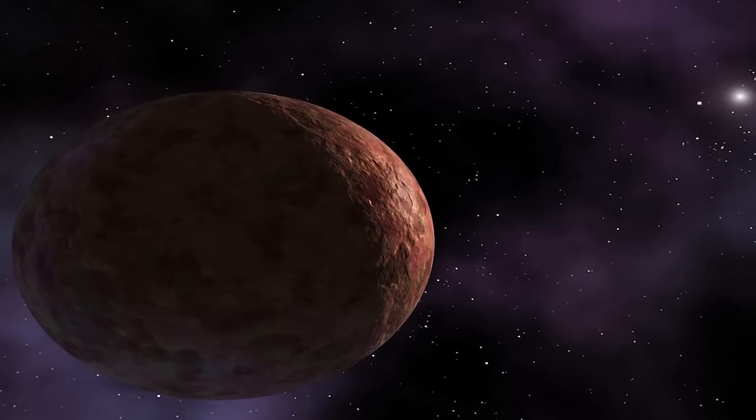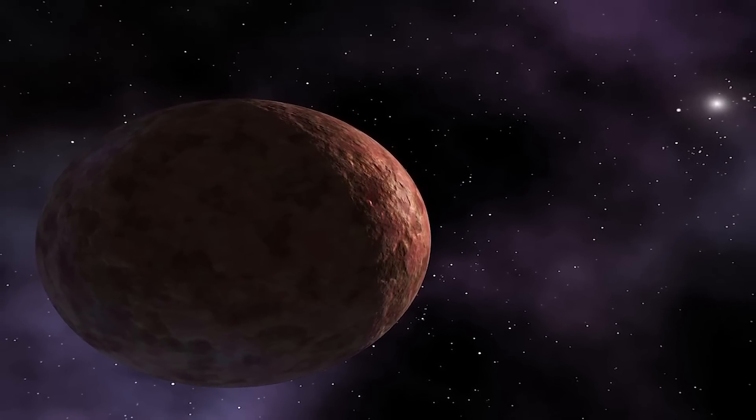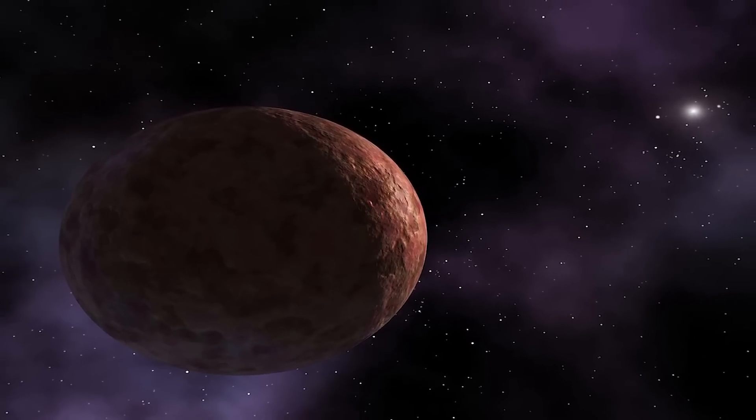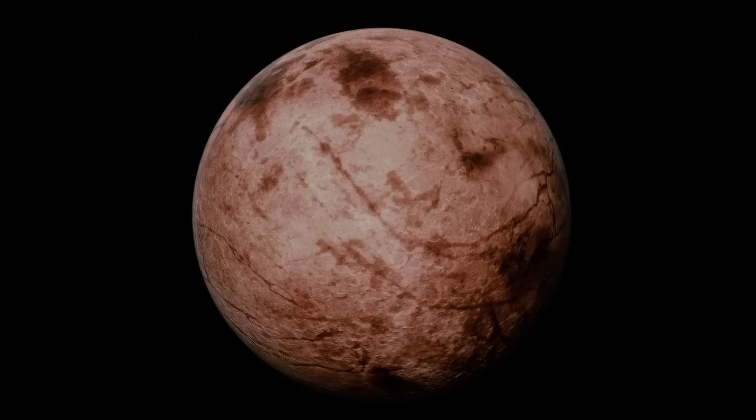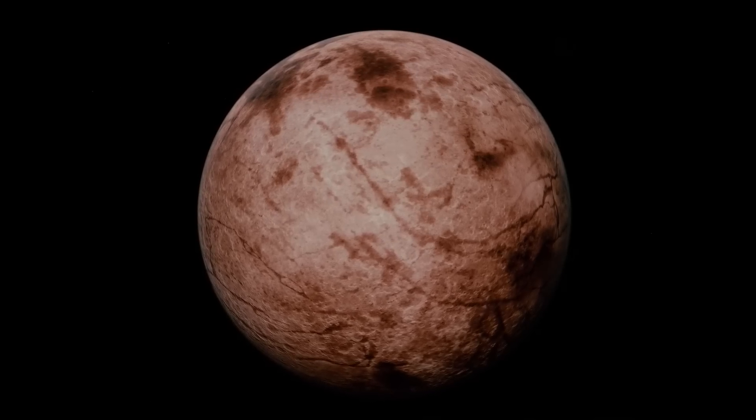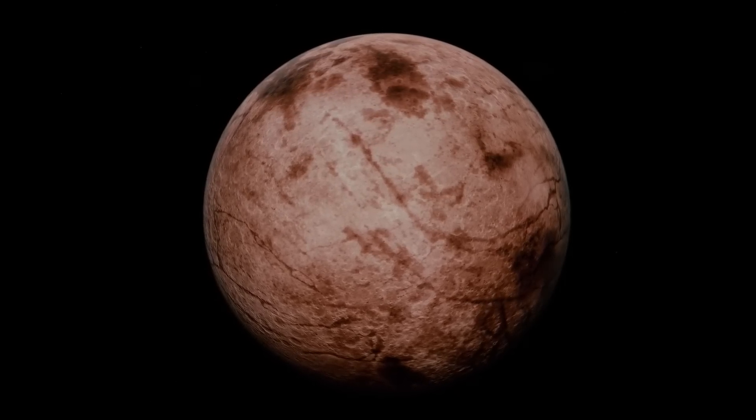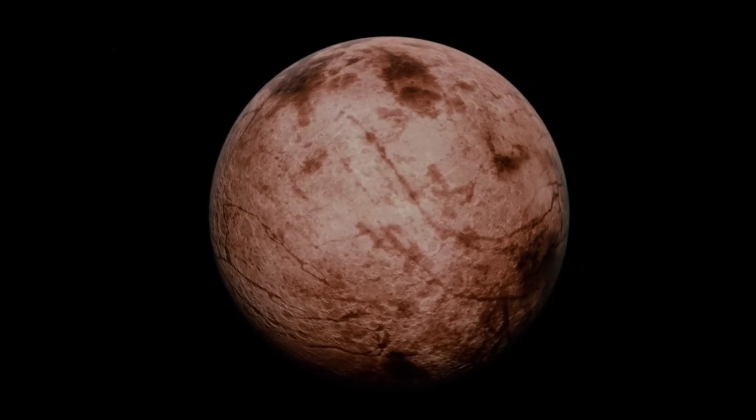Now, this planetoid Sedna never gets closer to the Sun than 76 AU and is currently 98 AU away. Sedna reaches a distance of 943 AU at the far end of its 11,500 year orbit.